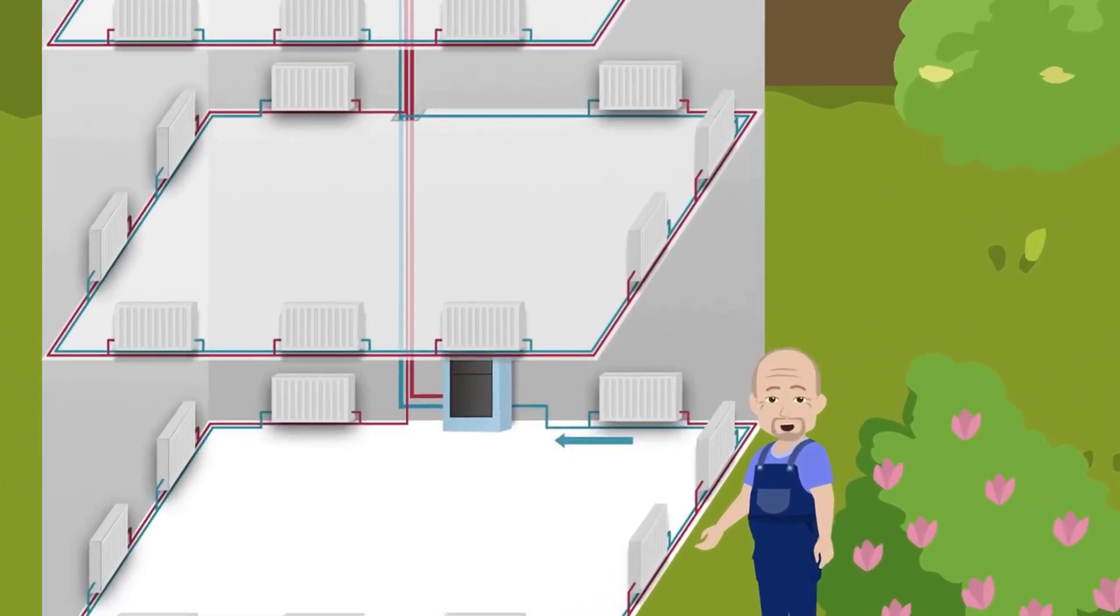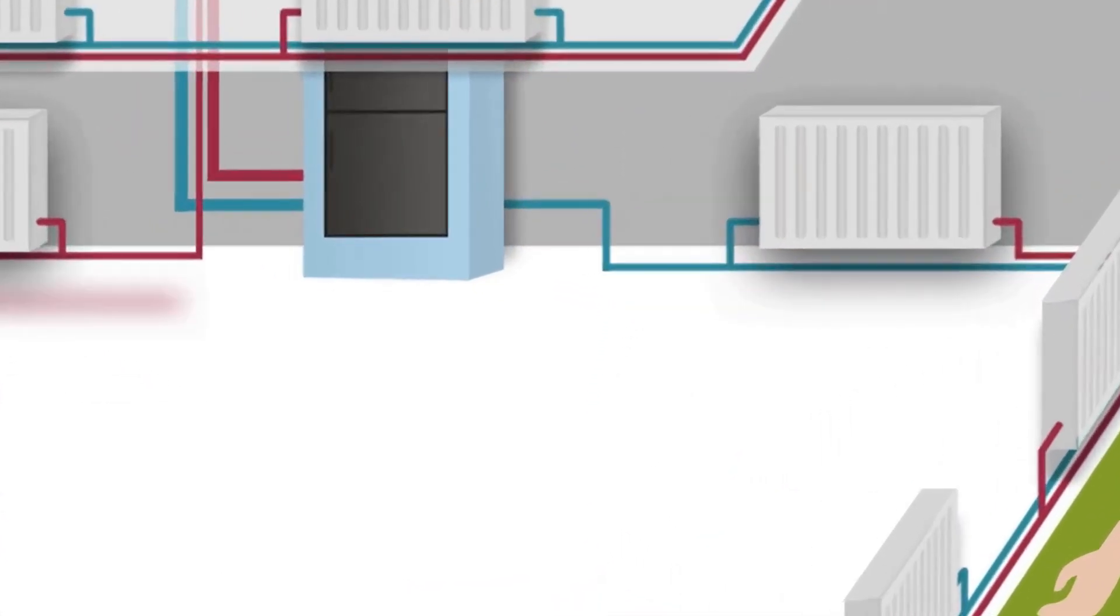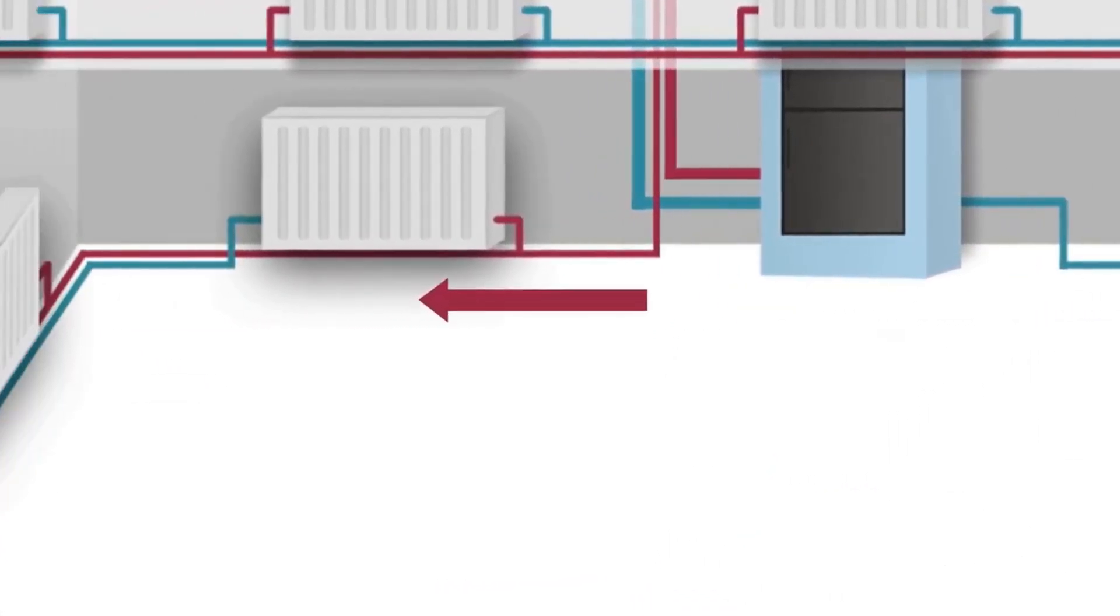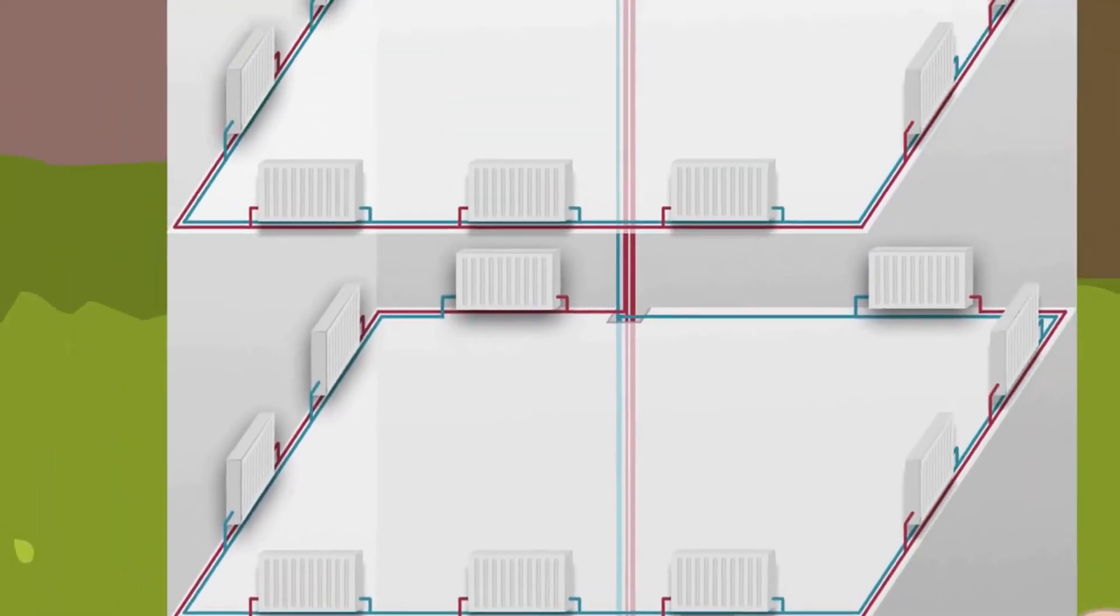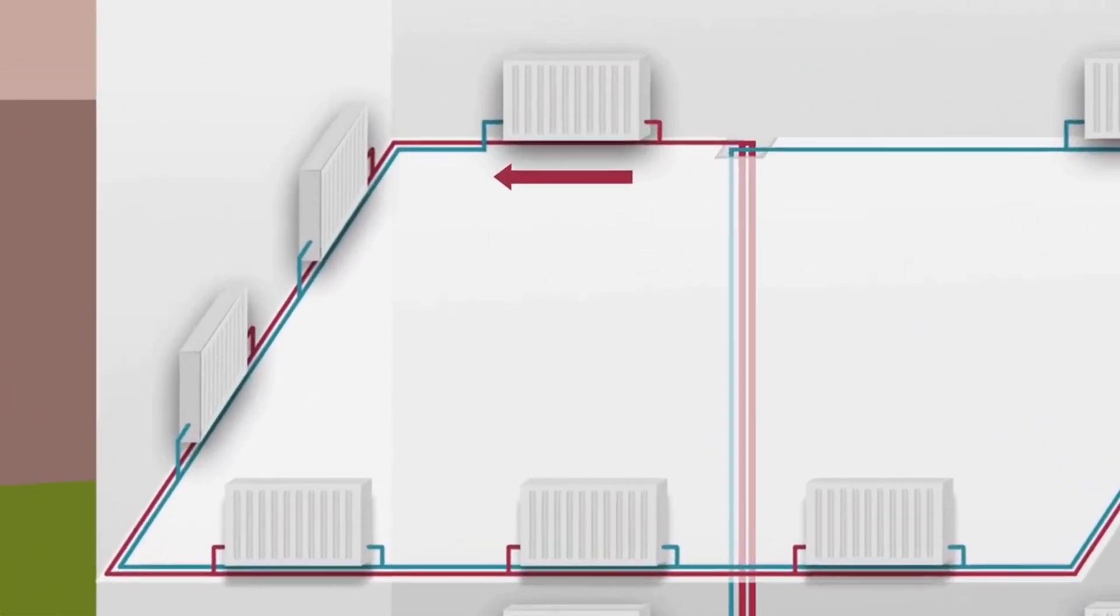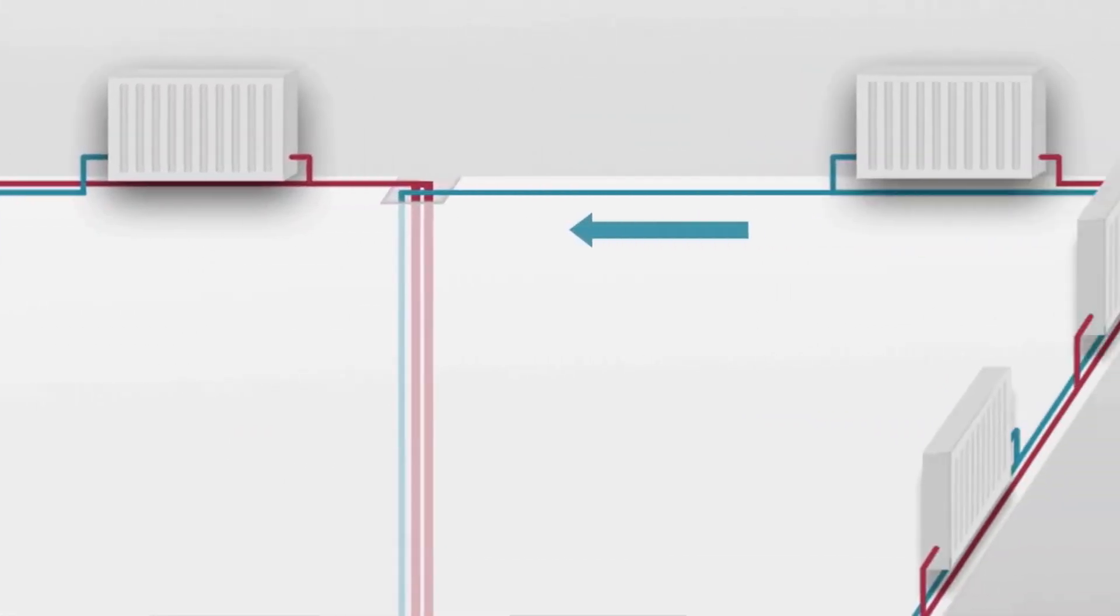It turns out that the first floor is closest to the return, like in this case, but farthest from the power source. The top floor is closest to the supply and farthest from the return.